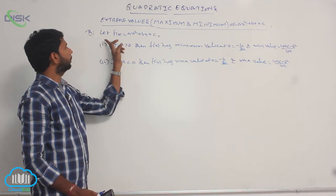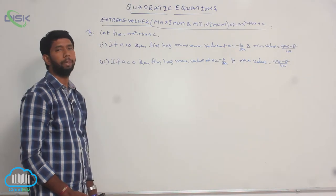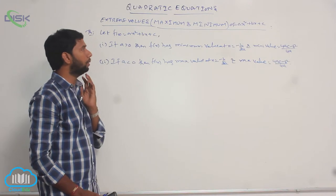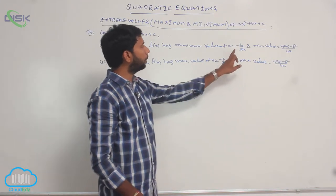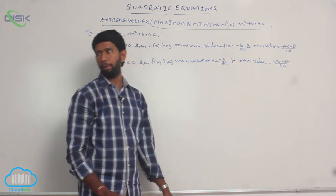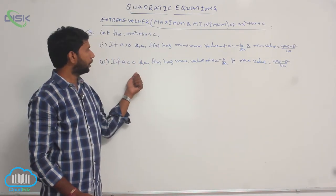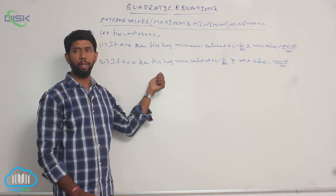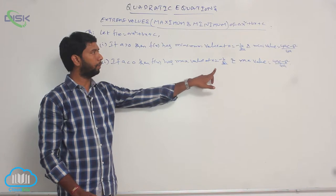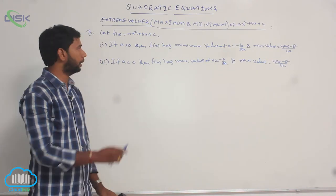Let the quadratic expression f(x) equal to ax² + bx + c. If a is greater than 0, then f(x) has minimum value at x equal to minus b by 2a, and minimum value is equal to 4ac minus b² by 4a. If a is less than 0, then f(x) has maximum value at x equal to minus b by 2a, and maximum value is equal to 4ac minus b² by 4a.